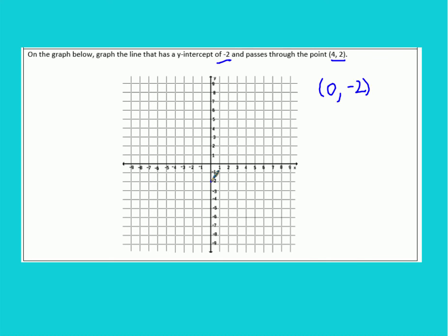0, negative 2 is right here. And 4, 2 is right here. So this graph is just going to continue to go up like this. And like so. So there's your graph of the line.